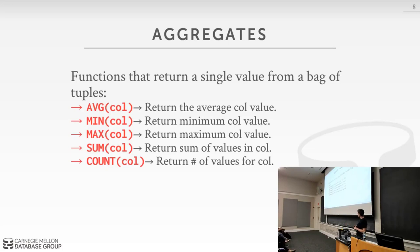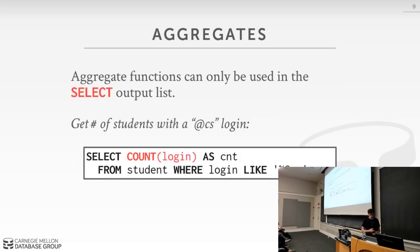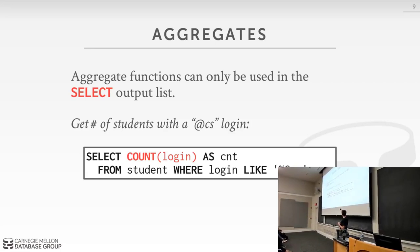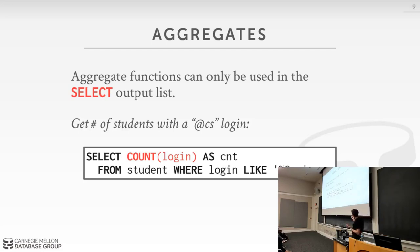Consider counting the number of students where the login ends with '@cs.' The aggregation can only appear in the output list of the SELECT statement. For COUNT, the login field doesn't actually matter — we're just counting tuples, so we can replace it with a star, or even replace the star with a one. These three queries are semantically identical and produce the same result, though the system may choose different implementations with different performance.